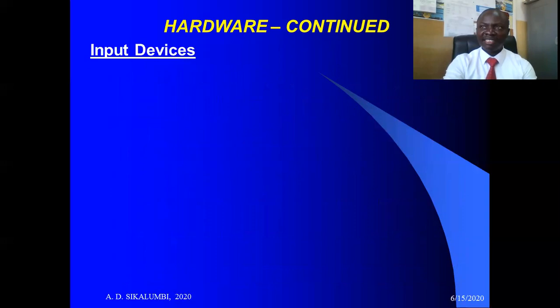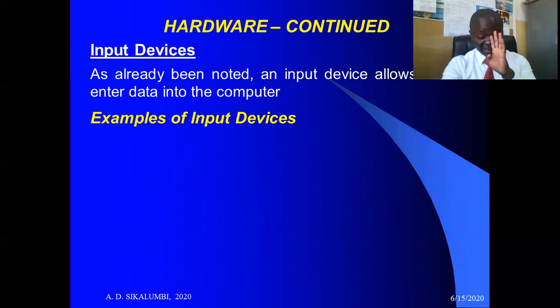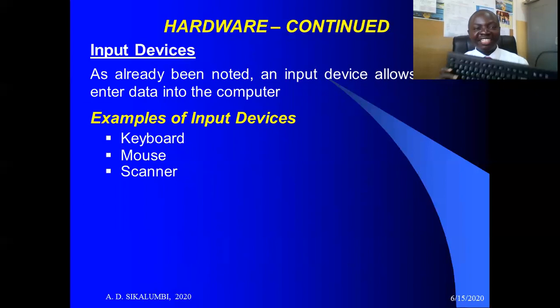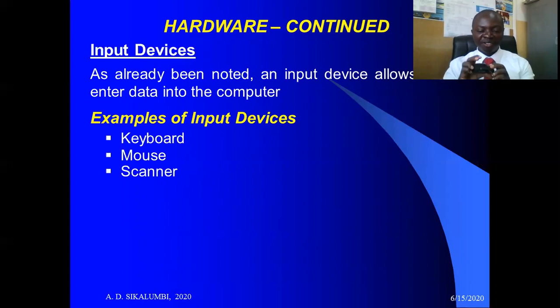Now let's look at the hardware components that support input and output activities. The keyboard is an input device used to put information into the computer. The mouse has different buttons and is used to issue commands to the computer — it is also an input device. The scanner is another input device.